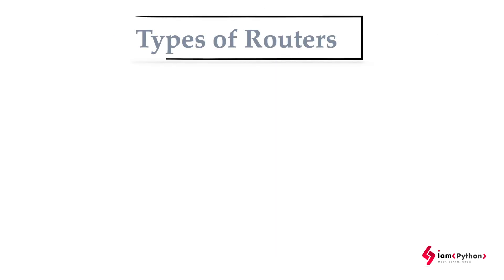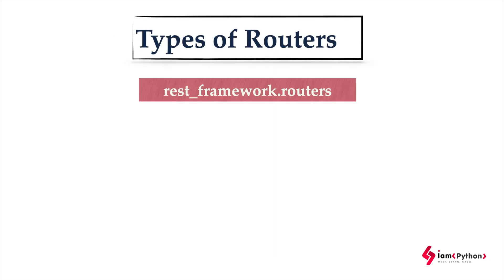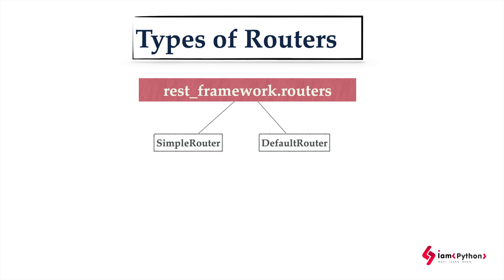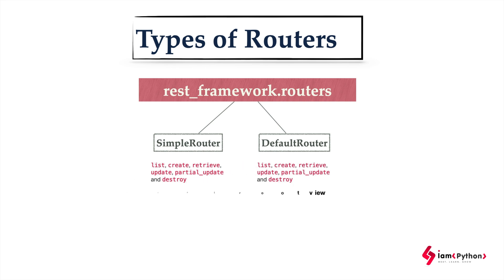What are the types of routers? Routers are a sub-module available in the REST framework. Under that, we have two important classes: one is SimpleRouter and another one is DefaultRouter. SimpleRouter contains list, create, retrieve, update, partial update, and destroy functions. DefaultRouter also contains the same thing.